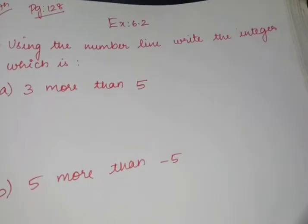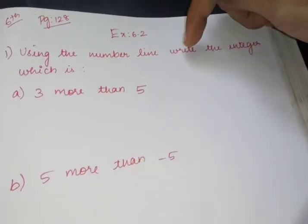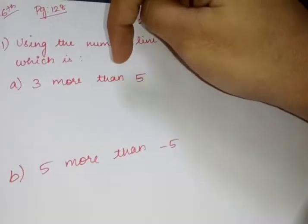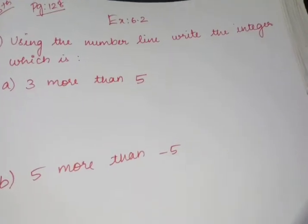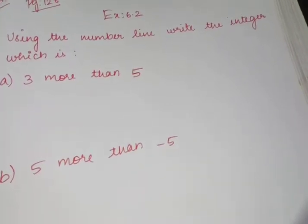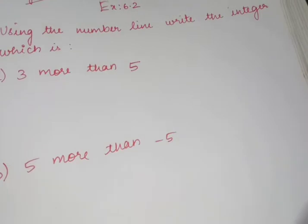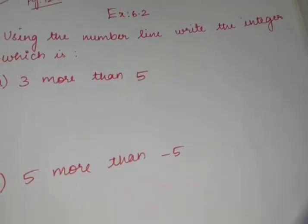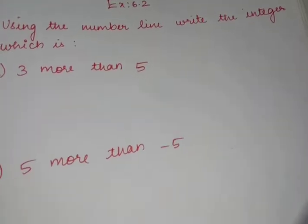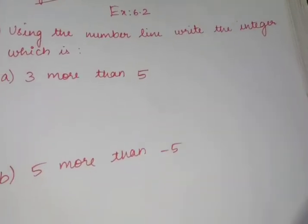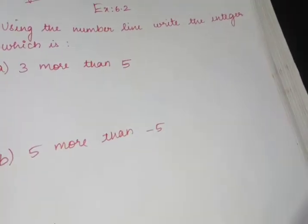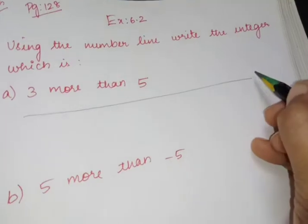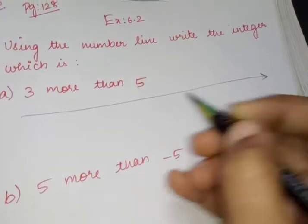So what is your first problem? Using the number line, write the integer which is 3 more than 5. Last class the same type of problem we have dealt with in the example problems. So we are going to do the same way to find what that integer is. First of all, you should draw one number line. You can use a scale and a pencil to draw a number line.